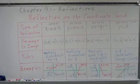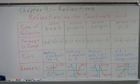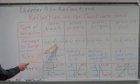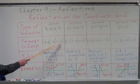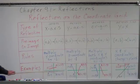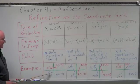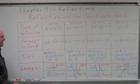Another way we can look at reflections is on the coordinate grid. We have a table of the type of reflection, the rules, and some examples. For instance, we can reflect across the x-axis — when we do that, whatever the y-coordinate is, we negate it. The rule is to multiply the y-coordinate by negative 1. For example, A at (−1, 1) goes to A prime at (−1, −1), and B at (2, 2) goes to B prime at (2, −2).